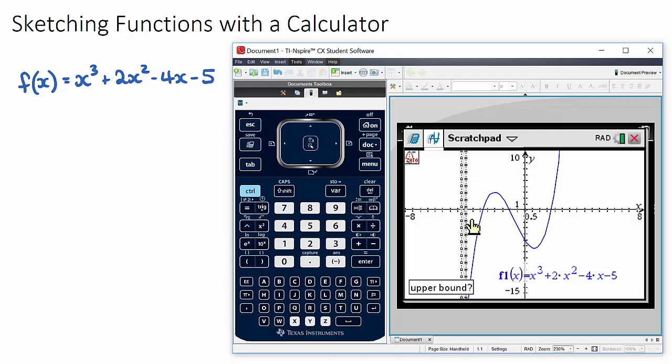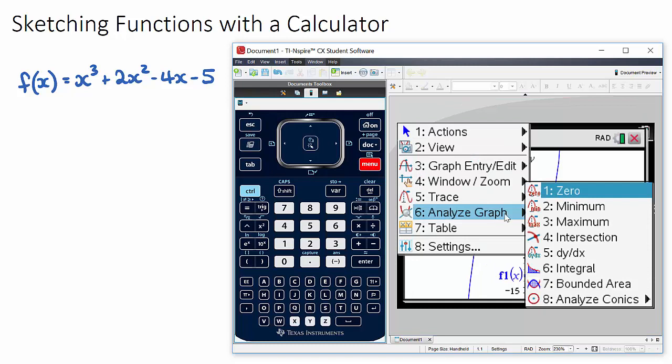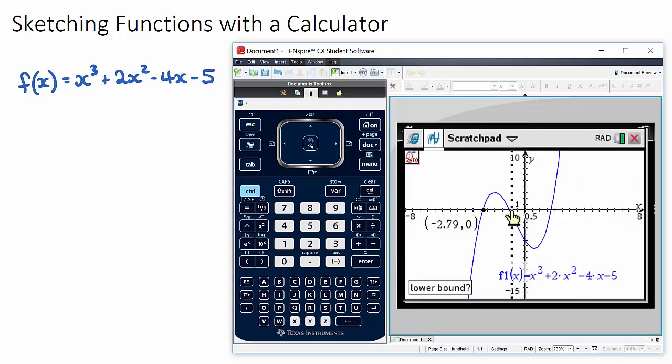If I click somewhere here and then an upper bound here, it'll tell you that this x intercept is negative 2.79 and zero. I could do it again - menu, analyze graph, zero - and find this one or this one. That's how we find x intercepts.